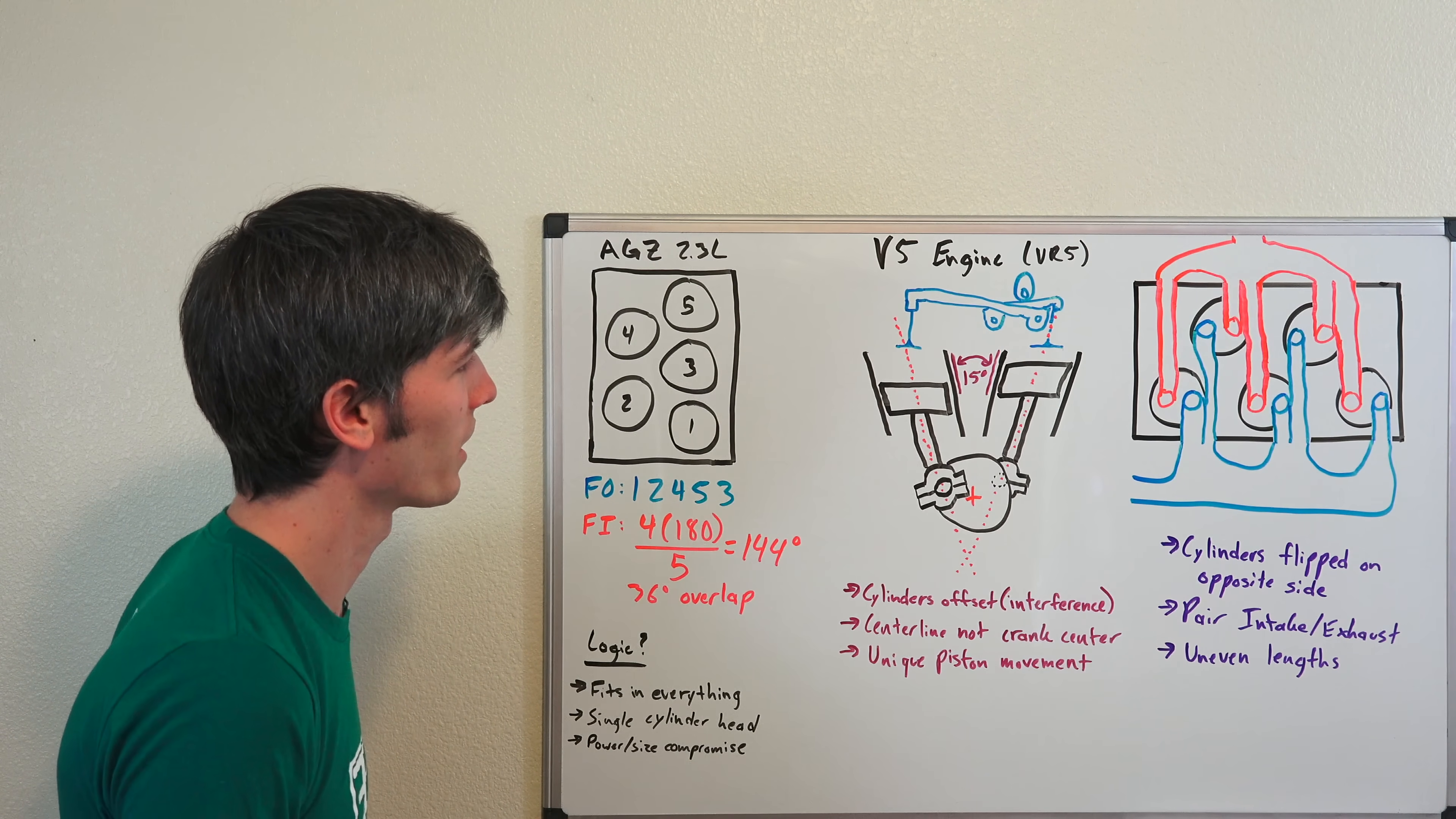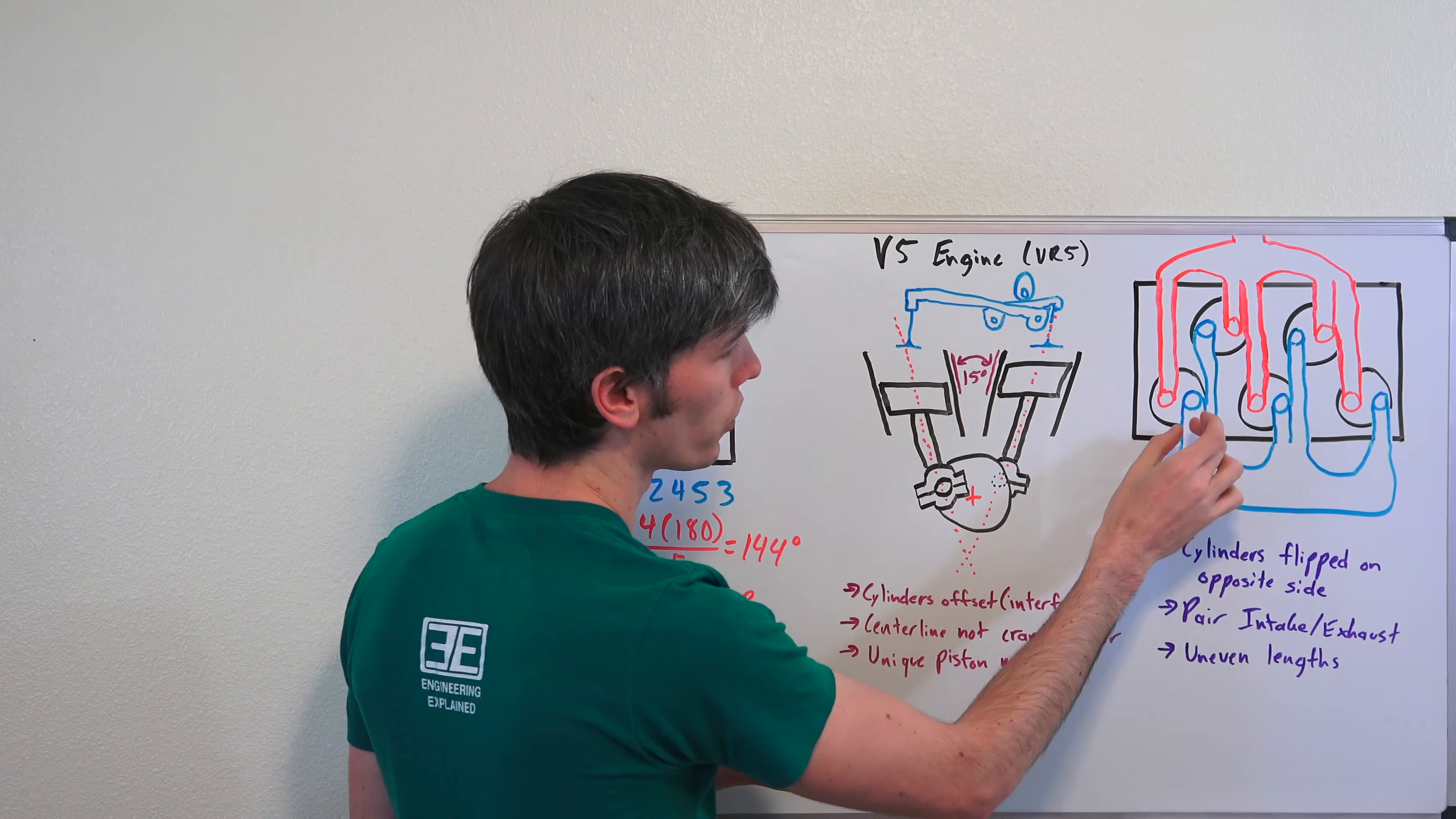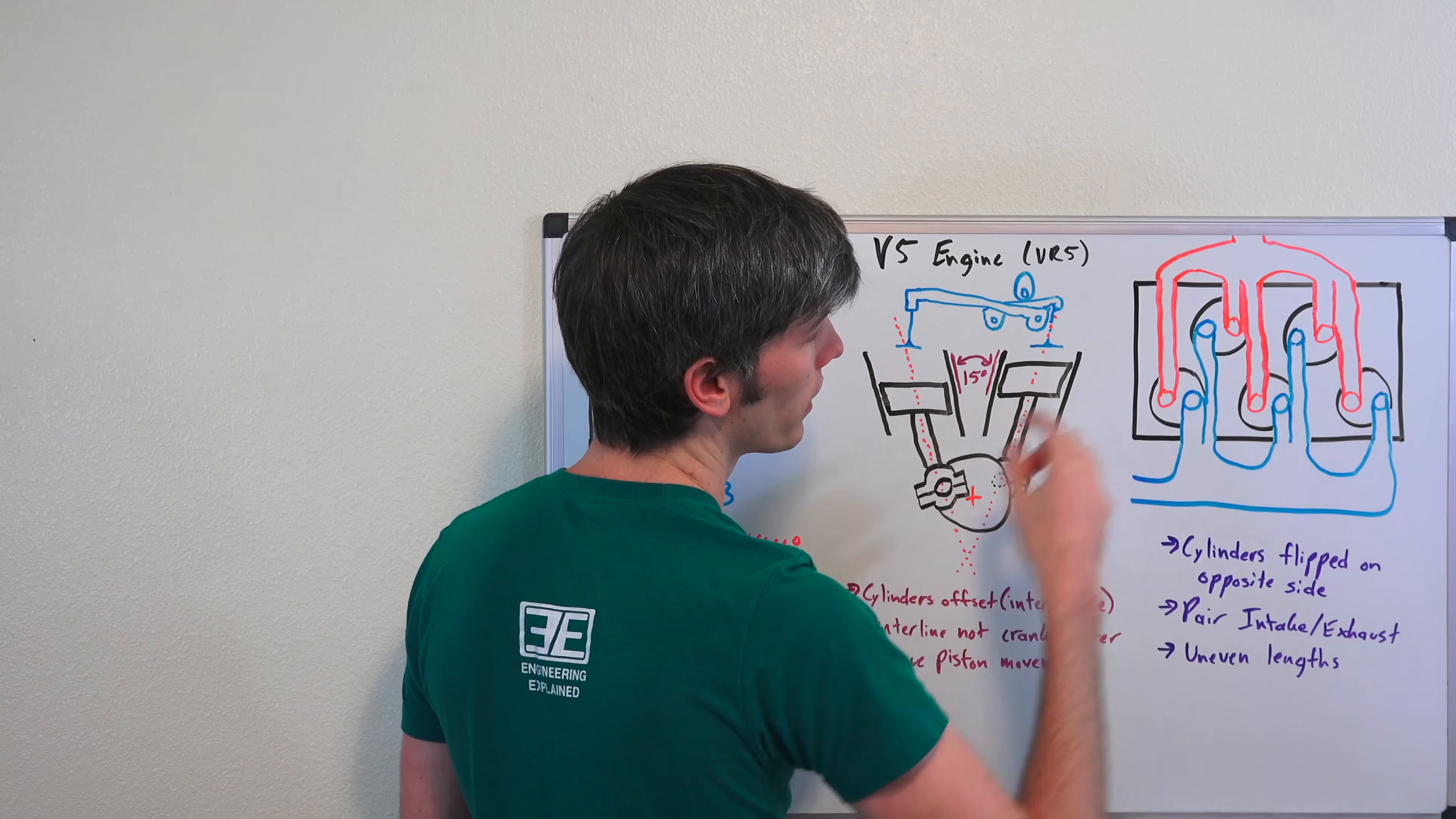I'm sure that's something that makes it more challenging to balance. Another thing that's interesting about this engine is how they've oriented the cylinders. They've flipped them around on the other side of the engine. So you've got your intake valve on the right, on the right, on the right, and then they're flipped over on the other side. So now it's on the left and on the left.